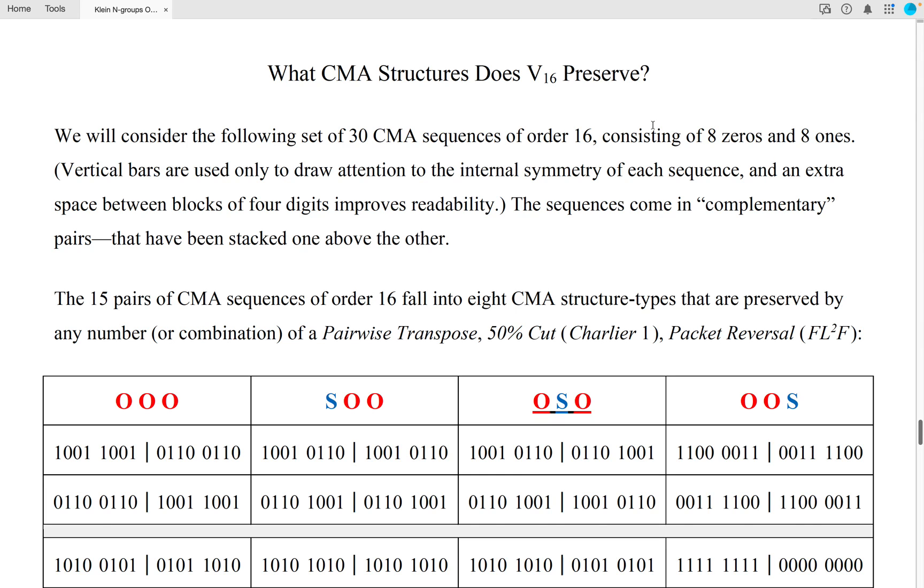A complementary pair can also be referred to as a sequence and its inversion. The 15 pairs of CMA sequences of order 16 fall into 8 CMA structure types that are preserved by any number or combination of a pairwise transpose, a 50% cut, or a packet reversal.